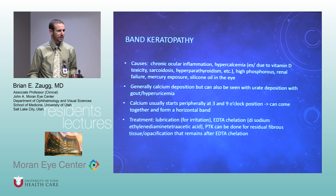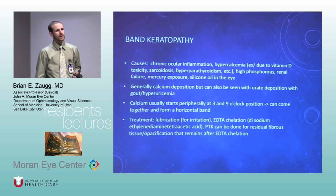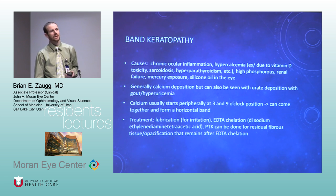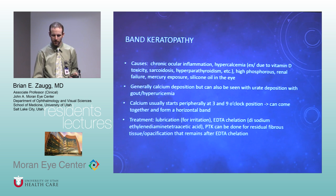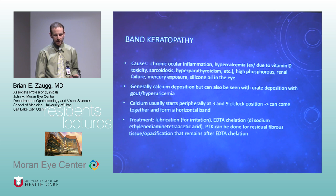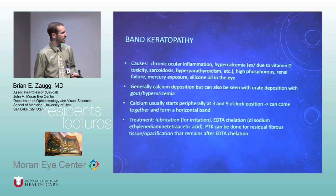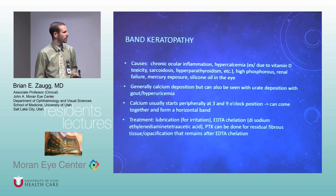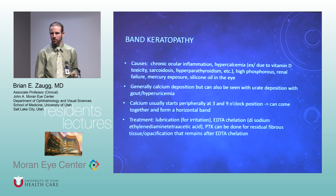Band keratopathy — think chronic inflammation and multiple surgeries as causes. These are elevated and cause irregular epithelium. Often the reason we're treating is because the epithelium is breaking down, causing pain and irritation. Treatment: EDTA chelation, done in clinic or OR. PTK can help with corneal opacities, but it usually comes back unless you control the underlying inflammation. Silicone oil in the eye is another high-risk factor.